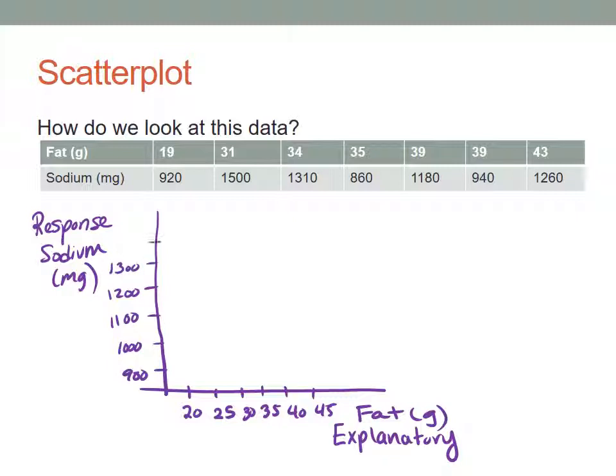Now I should be able to plot these points - you've plotted XY coordinates before. I'm going to plot the point 19, 920; 31, 1500; 34, 1310; 35, 860; 39, 1180; 39, 940; and 43, 1260. I'm going to talk about how we can read our scatter plot to say something about it, what information it gives us.